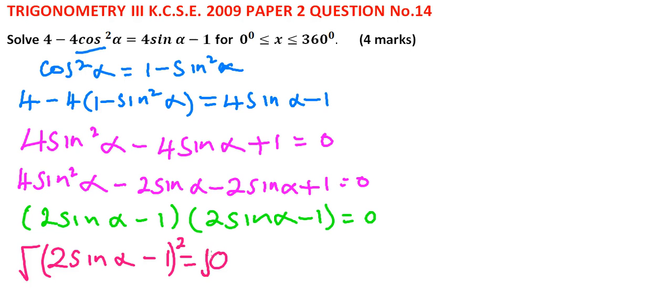We get the square root for both sides, and we get this is 2 sin alpha, that is, minus 1 is equal to 0, implying 2 sin alpha is equal to 1, and sin alpha is equal to 1 half.